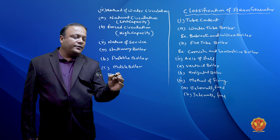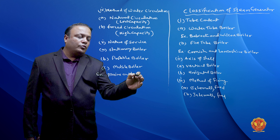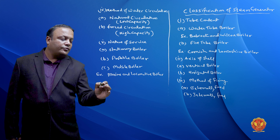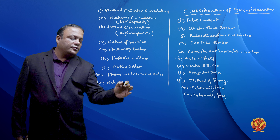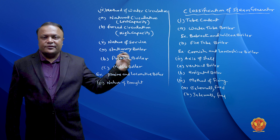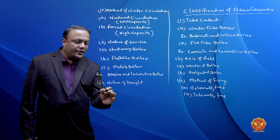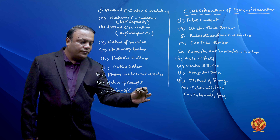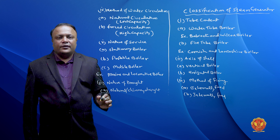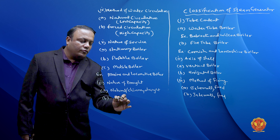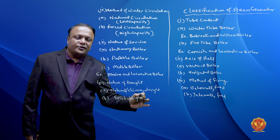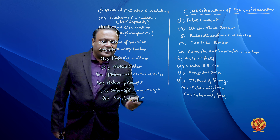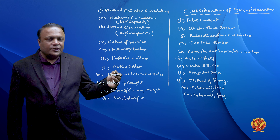The fifth classification is based on the nature of service. The first type is a stationary boiler, which is fixed in one place and cannot be moved. The second is a portable boiler, which can be lifted and moved from one place to another. The third is a mobile boiler, which can be transported over long distances to produce steam, such as marine boilers and locomotive boilers.